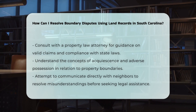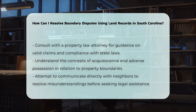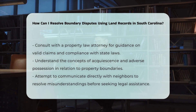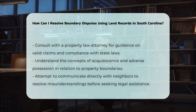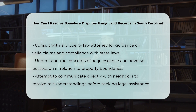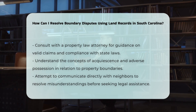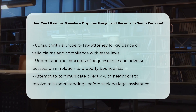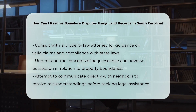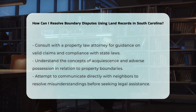Acquiescence and Adverse Possession. Understand the concepts of acquiescence and adverse possession. Acquiescence involves mutual recognition of a boundary line by adjoining landowners over a long period. Adverse possession, on the other hand, requires actual, exclusive, open, and continuous possession of the property for a statutory period — 10 years in South Carolina.